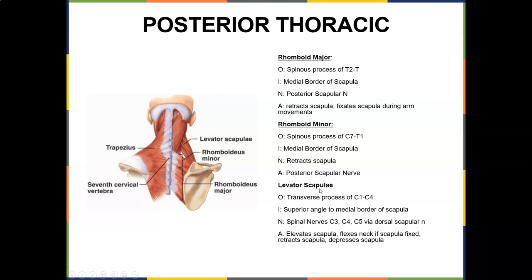The levator scapulae — that's what you rub on your neck when it hurts. It originates on the transverse process of C1 to C4. This is why we do the bones first, so you understand where the spinous process and the medial border of the scapula are. If you didn't learn the bones, you're having to relearn not only the bones but now the muscles as well. The levator inserts on the superior angle of the medial border. Nerve supply is spinal nerves C3, C4, and C5 via the dorsal scapular nerve — dorsal meaning posterior.